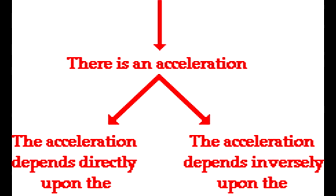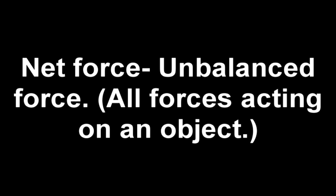The second law of motion is: when the forces are unbalanced on an action, there is an acceleration. The acceleration depends on the net force and the object's mass. The net force is an unbalanced force.